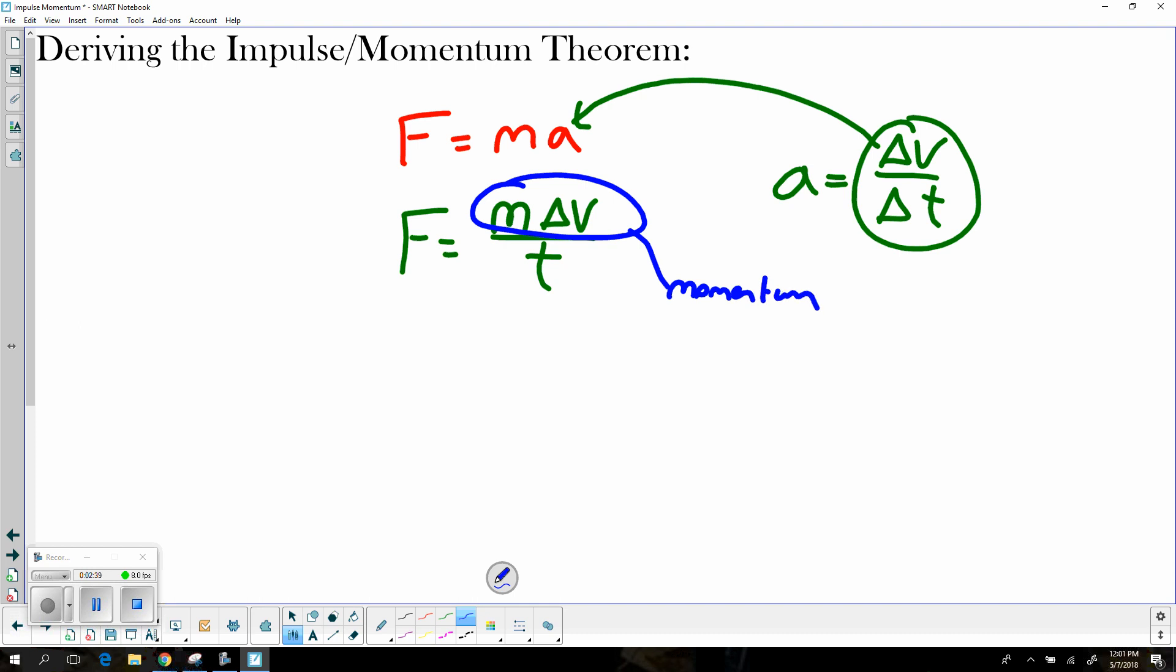And if I go ahead and multiply both sides by t, I'm going to have here that momentum is equal to force times a period of time. And we call this side of the equation the momentum side, and we call this side of the equation the impulse side.